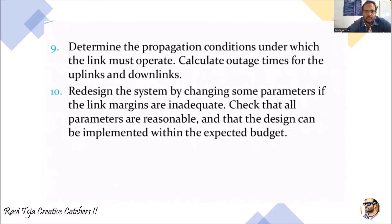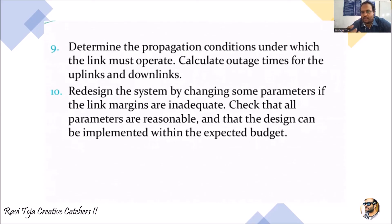The ninth step is to determine the propagation conditions under which the link must operate. Based on the comparison of results, we decide whether the uplink or downlink conditions are suitable. We also need to calculate the outage time for both the uplink — when transmitting from earth station to satellite — and the downlink — when receiving the signal from satellite to earth station.